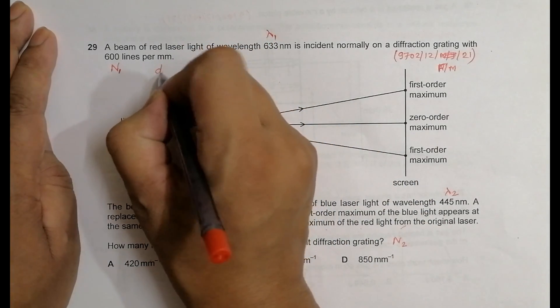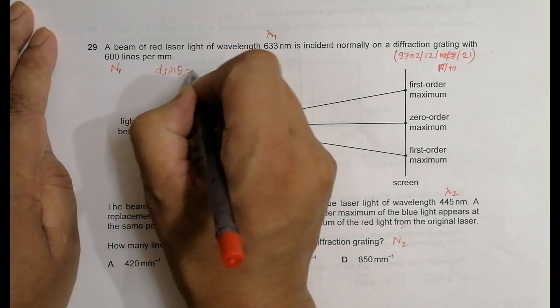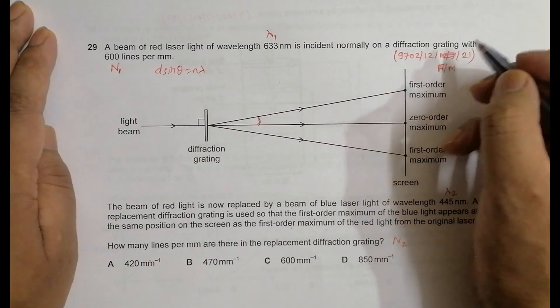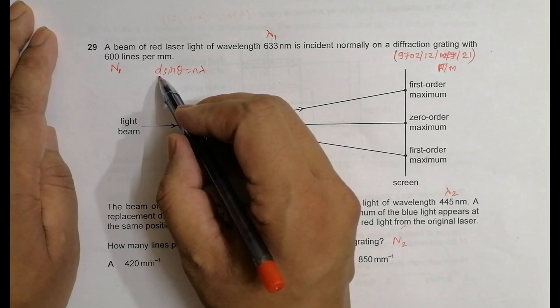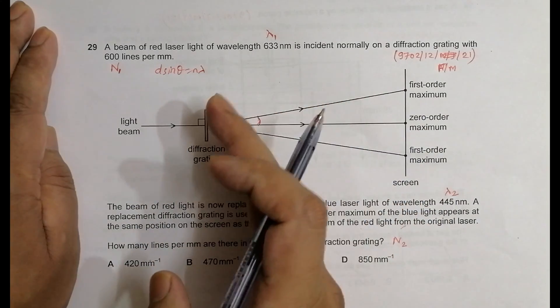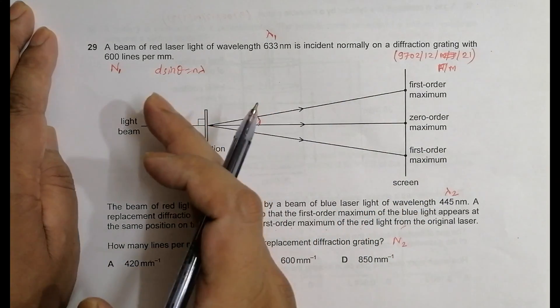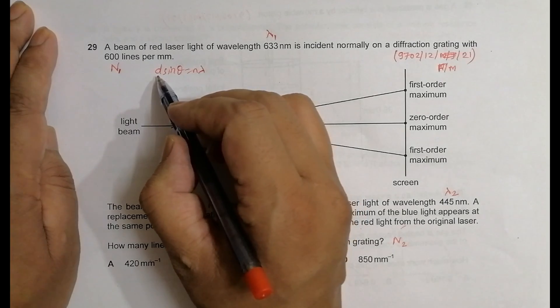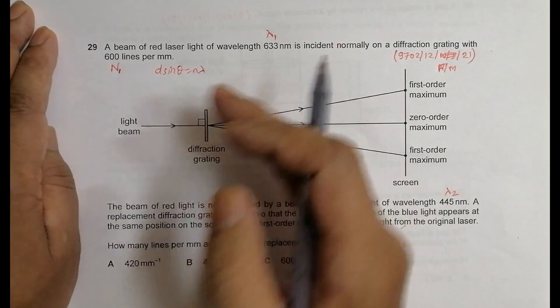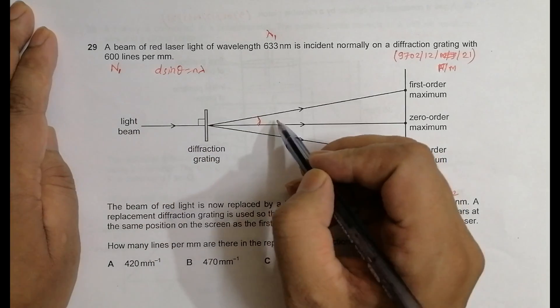So d is the distance between each gap and block. Theta is the angle formed by the rays with the straight line zero order. N is the order of the maxima: first order, second order, zero order, and so on. Lambda is the wavelength.